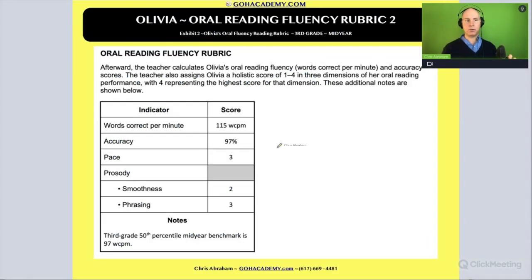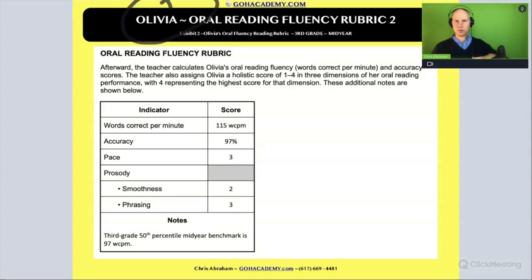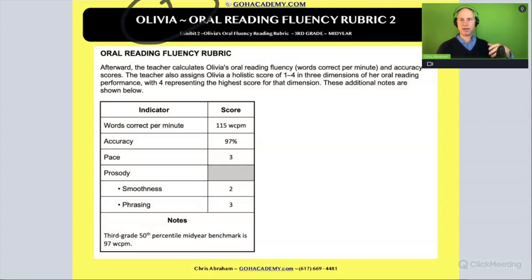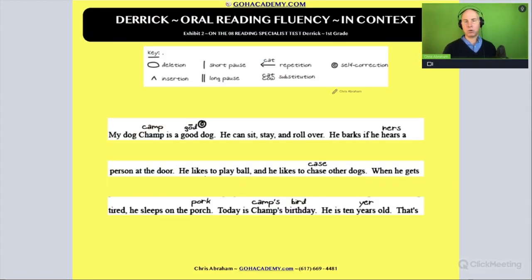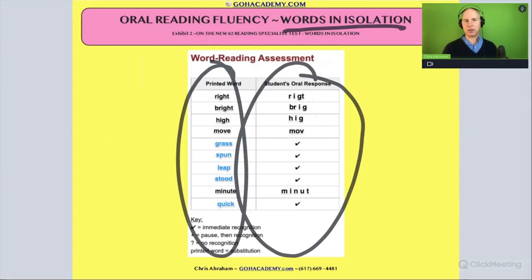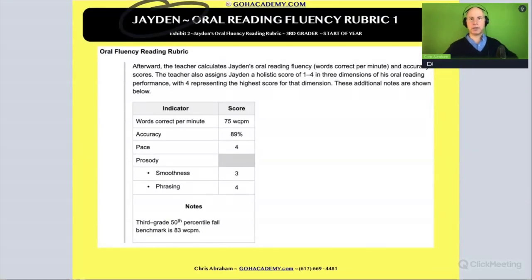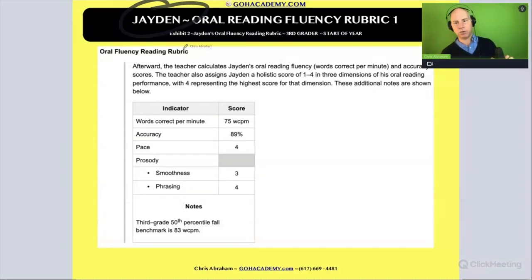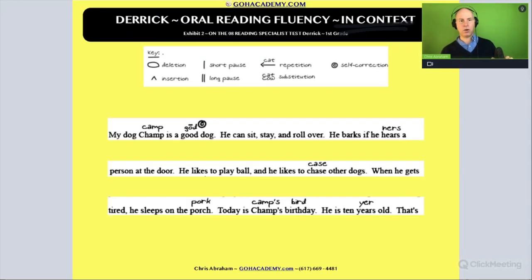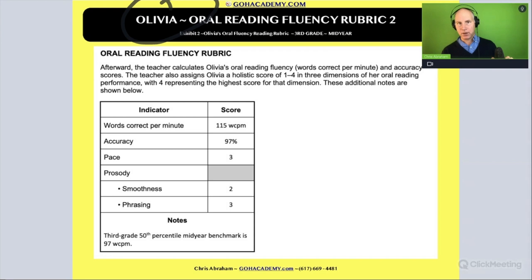Then there's another one — we'll look at a rubric for Olivia. This is going to lead us to getting ready for our first essay. So in summary: we're going to talk about oral reading fluency in context and in isolation, and we're going to look at grading a student's oral reading fluency using rubrics like this one for Jayden and this one for Olivia.